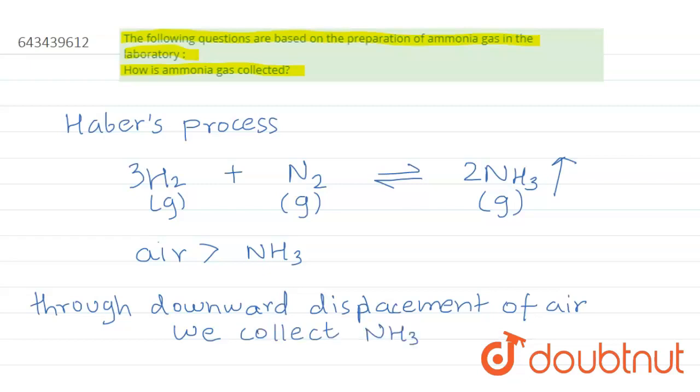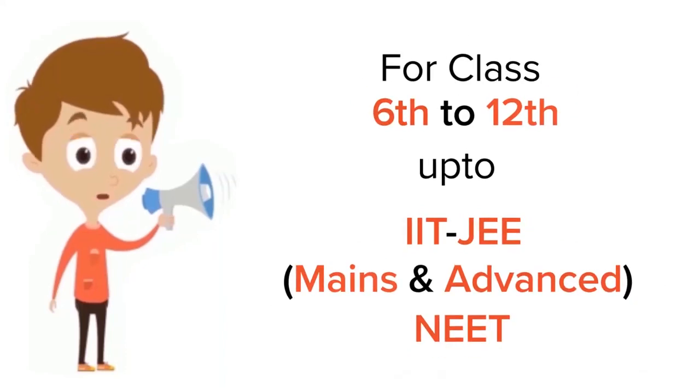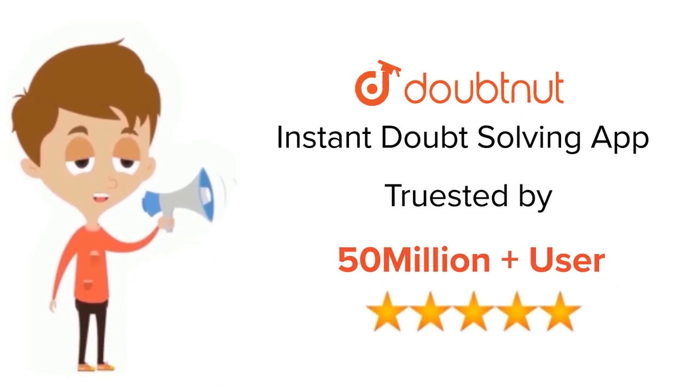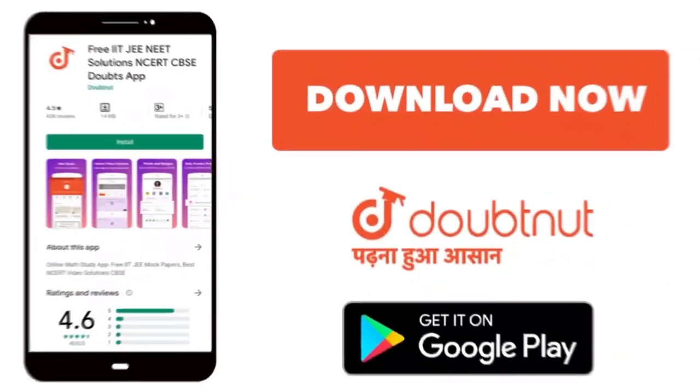Ammonia in Haber's process. So I hope you like my answer and understand the concept. Thank you. For class 6-12, IIT-JEE and NEET level, trusted by more than 5 crore students. Download Doubtnut app today.